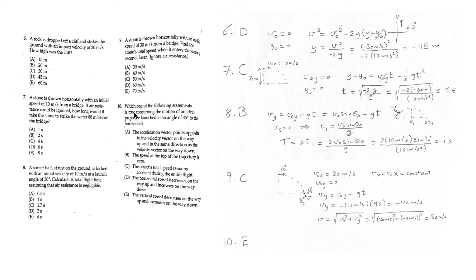For question 10, which statement is true for a projectile launched at 45 degrees? A: acceleration points opposite to velocity on the way up and same direction on the way down. B: speed at the top is 0. C: total speed remains constant during the entire flight. D: horizontal speed decreases on the way up and increases on the way down. E: vertical speed decreases on the way up and increases on the way down.